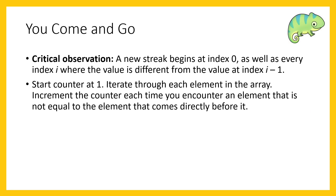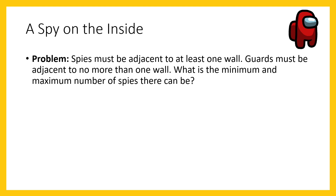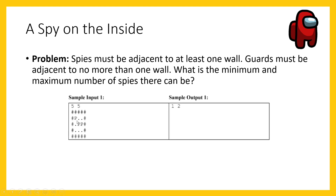Moving on to 'A Spy on the Inside.' In this problem, you're given a map — a floor plan — where dots are floor cells, hashtags are wall cells, and capital P's denote people. People can be either spies or guards, but you don't know which. Spies must be adjacent to at least one wall, and guards must be adjacent to no more than one wall. You are expected to find the minimum and maximum number of spies.